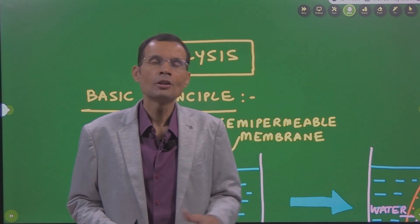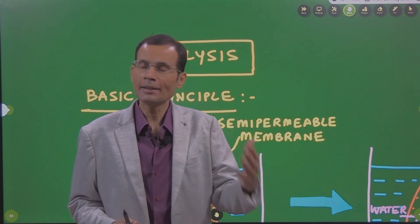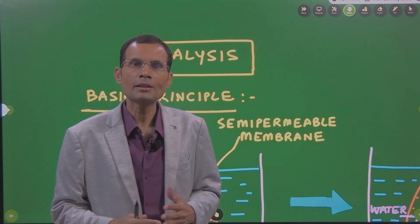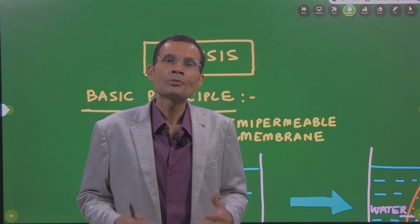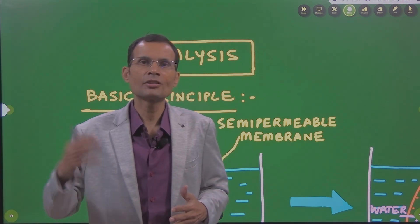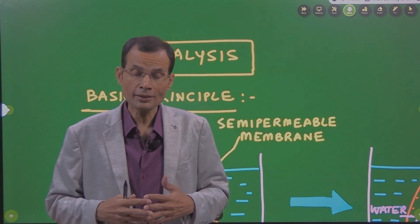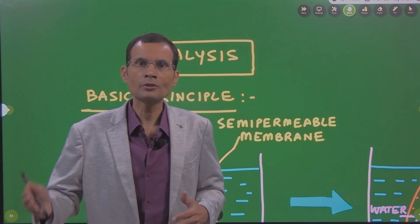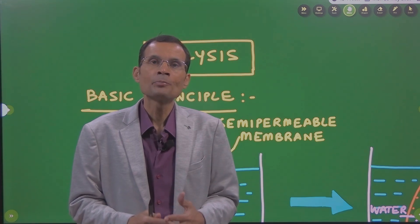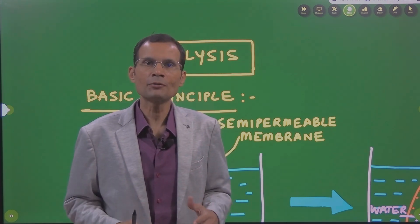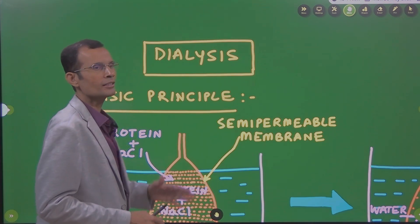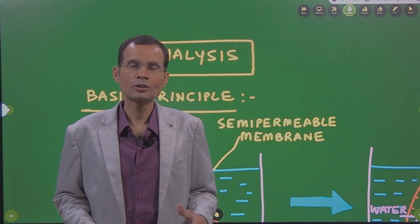It could be an acute renal shutdown. In such a case, there might have to be a temporary or artificial setup whereby the kidney's function can be performed temporarily by this artificial kidney, or till such a time when the kidney regains its function. Or it could be a chronic renal failure or end-stage renal disease when the patient is going to require a renal transplant. This artificial setup or artificial kidney or this procedure is called dialysis, and in this video we are going to discuss some basic principles underlying this procedure.